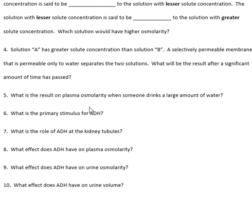This is one concept students often get confused about, because this is not diuretic hormone — this is anti-diuretic hormone. So it prevents you from making urine; it stops you from peeing too much. Anti-diuretic hormone.